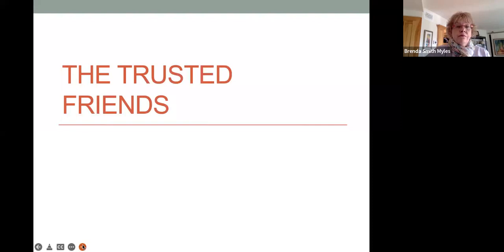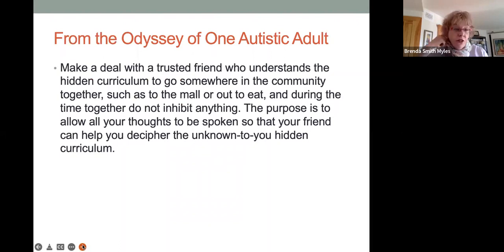The trusted friends. Judy Endo, who wrote the book, The Odyssey of One Autistic Adult, says, make a deal with a trusted friend who understands the hidden curriculum to go somewhere in the community together, such as to the mall or out to eat. And during the time together, do not inhibit anything. The purpose is to allow all your thoughts to be spoken so that your friend can help you decipher the unknown to you hidden curriculum. I'll be talking about the importance of having a mentor next week and some of the criteria for a good mentor. But, you know, if you have ever been in a situation and you didn't know what to do, whether or not you have autism, if you have someone with you who is a trusted friend, and even if they don't know what the answer is, you know, just by being there together, you feel a little bit better. So if our autistic people can have that trusted friend, that mentor who is with them, that helps us all do better along that journey called life.